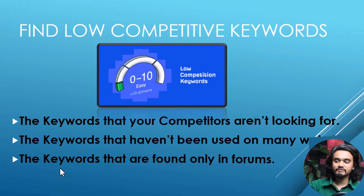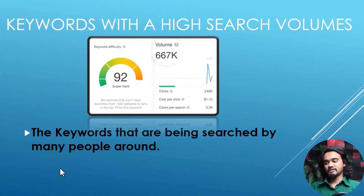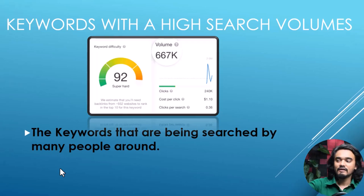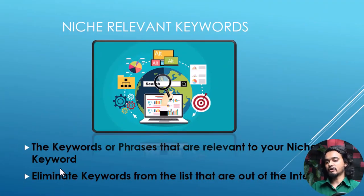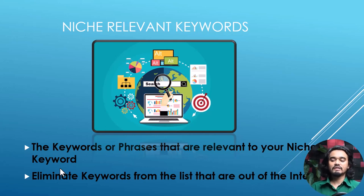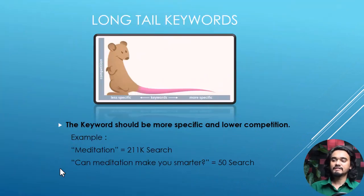Number two is keywords with a high search volume — keywords that are being searched by many people. Number three is niche relevant keywords — keywords or phrases that are relevant to your niche. Eliminate keywords from the list that are out of the intent.